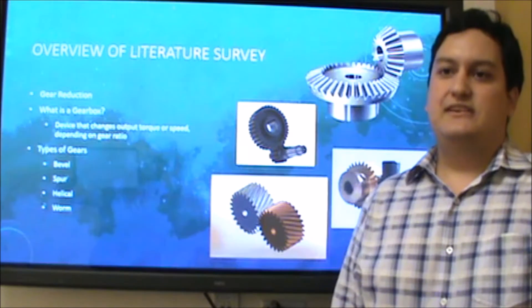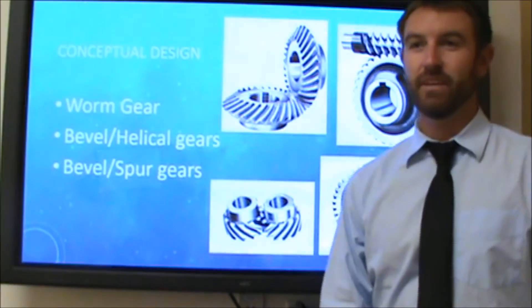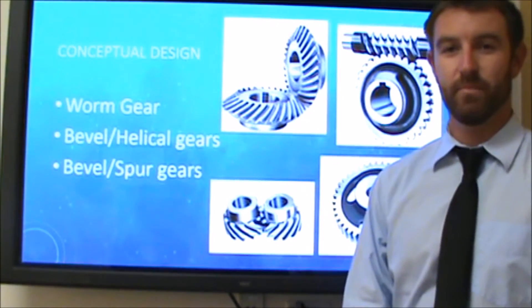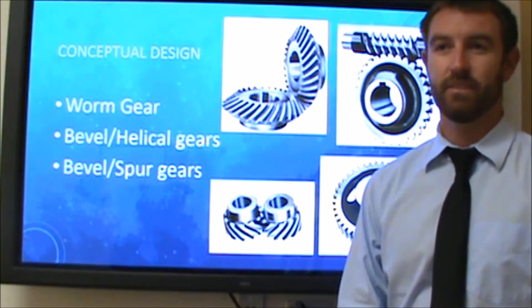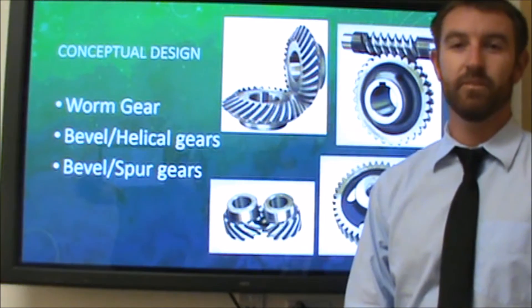There are four types of gears typically used in a Gearbox: bevel, spur, helical, and worm. We had three different designs we first considered: a single worm gear reduction, a bevel gear reduction with a spur gear, and a bevel gear reduction with two helical gear sets.